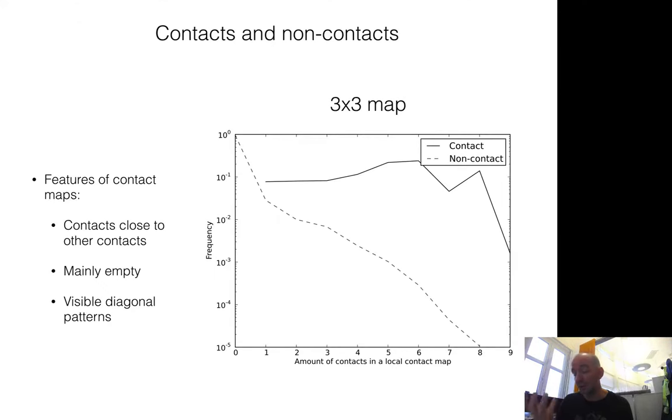If you take all patterns with a given number of contacts in this 3x3 map and look at the frequency, when there's no contact in the middle, you see that 98-99% have no other contacts, about 2% have one contact, and another 1% have two contacts.